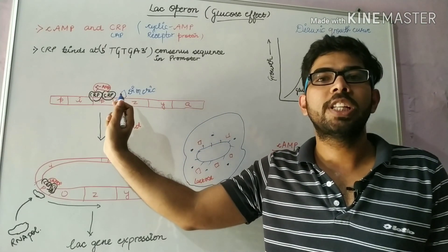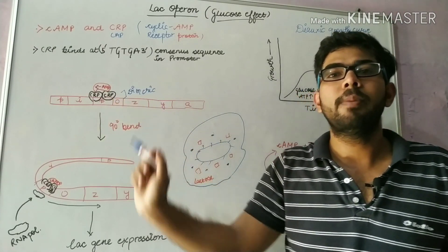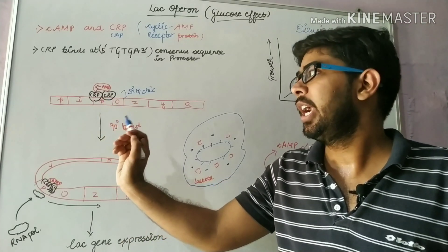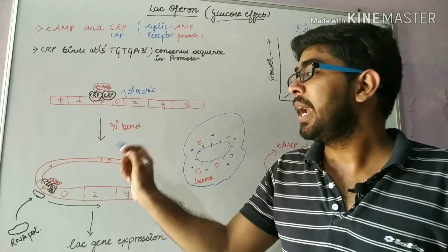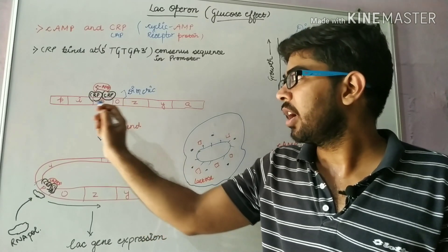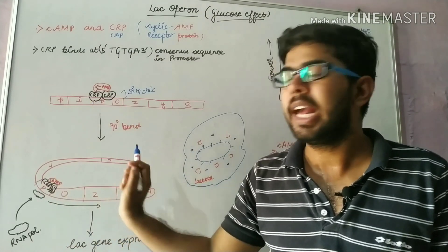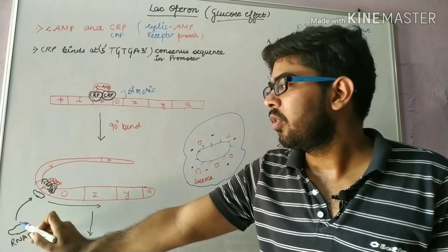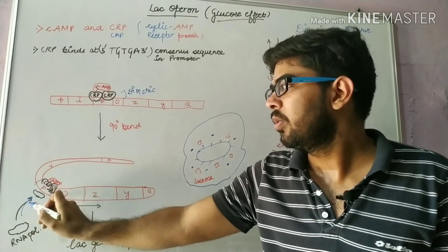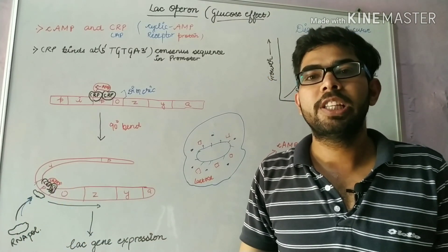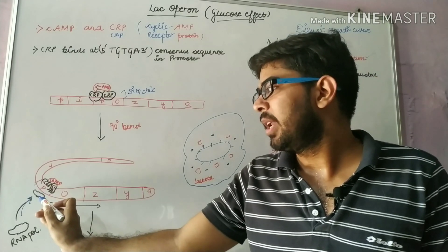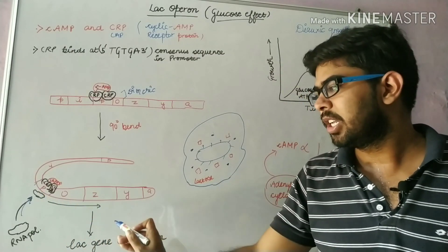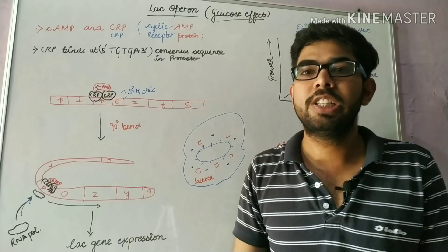Now, this allows cyclic adenosine monophosphate to bind to this CRP dimer, and it will lead to bending of the lac operon gene at 90 degrees. In this way, this allows RNA polymerase to bind to this promoter region, and this RNA polymerase will proceed further and lead to the expression of lac operon gene.